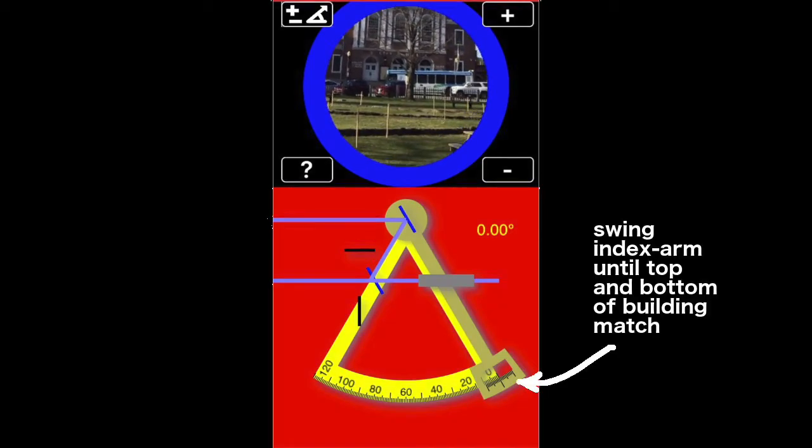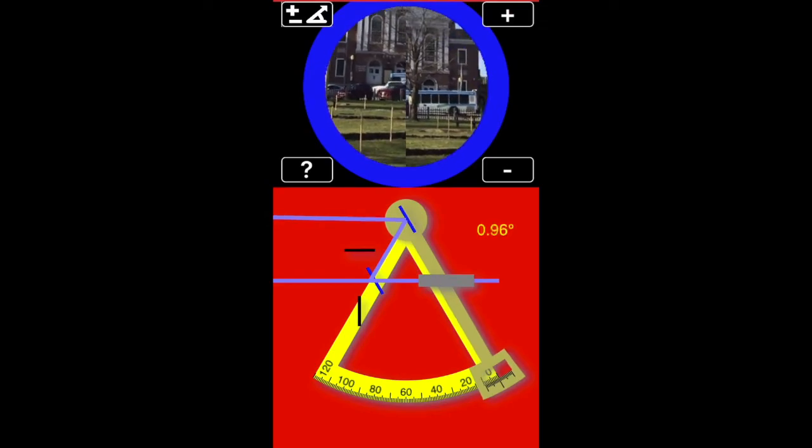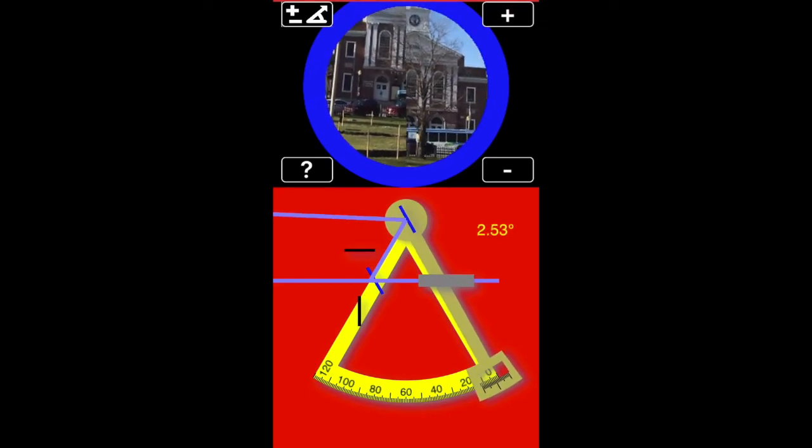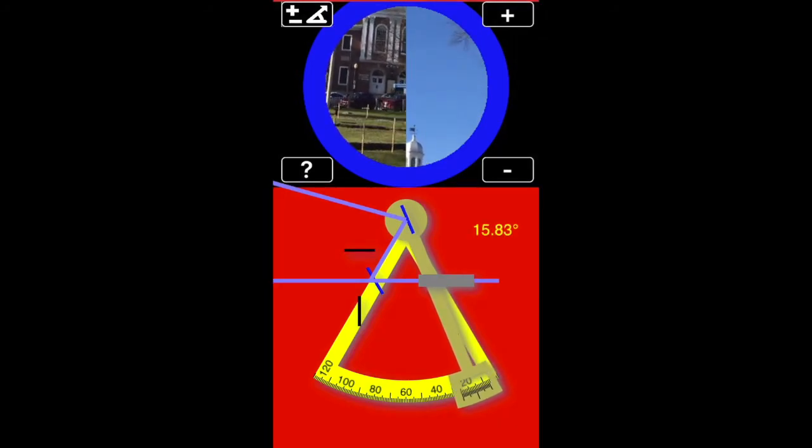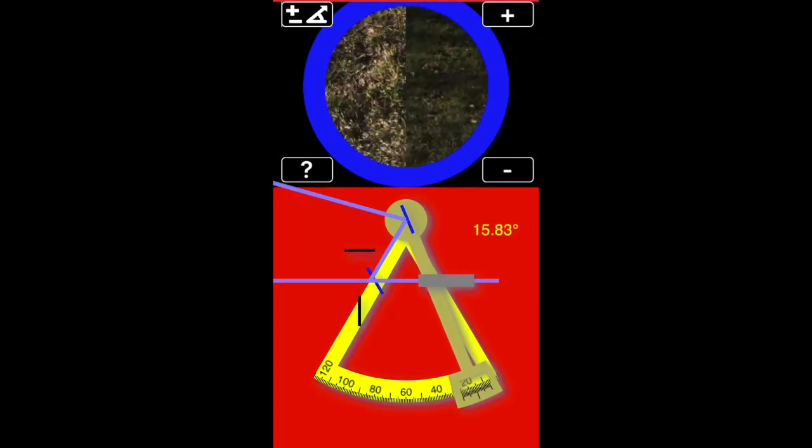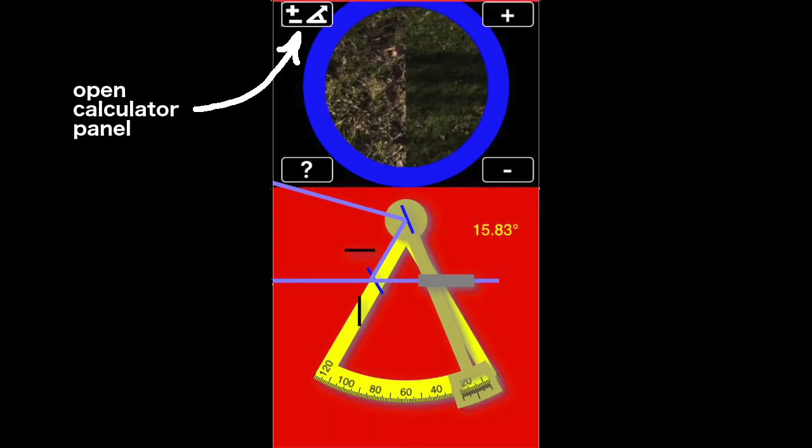Now swing the index arm until we align the top and the bottom of the building. Now open the calculator panel.